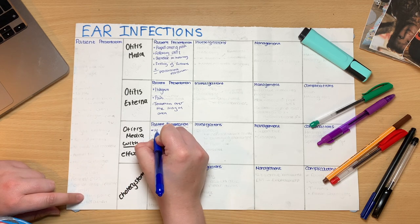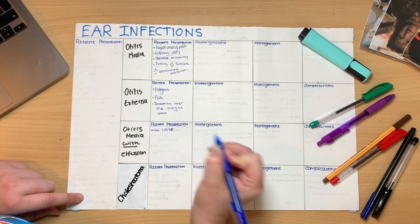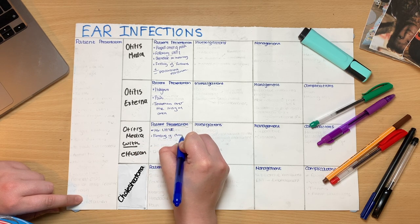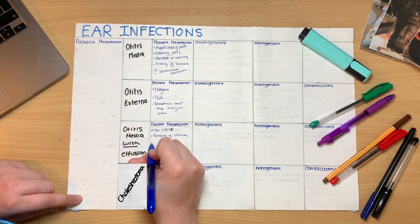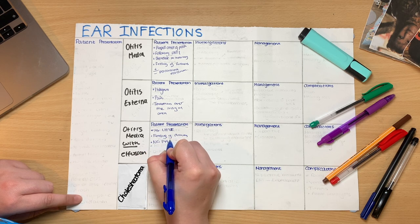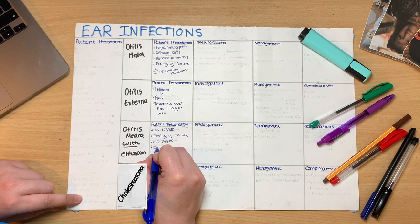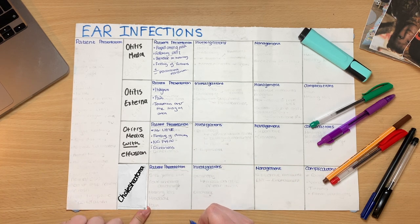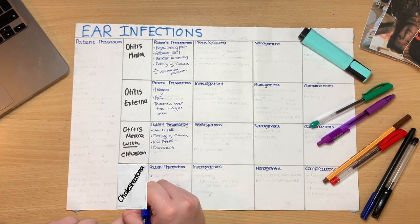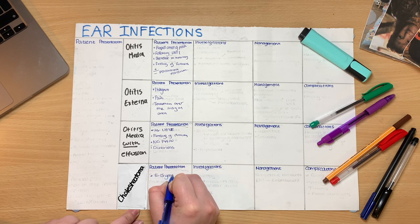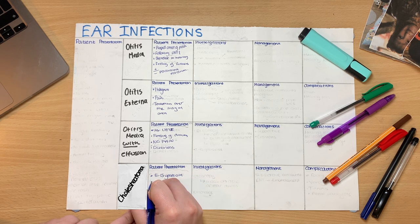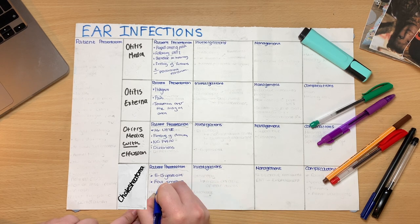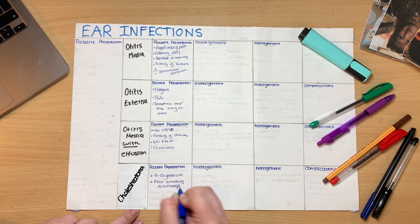We now move on to otitis media with effusion, more commonly known as glue ear. This presentation is similar to otitis media, but there is commonly no onset of pain. You'd expect to see this after an upper respiratory tract infection, with a feeling of fullness and dizziness. Finally, we have a cholesteatoma, which is a benign tumour in the ear, normally presenting around 5 to 15 years old. It will present with a foul-smelling discharge, hearing loss, headache, and pain.